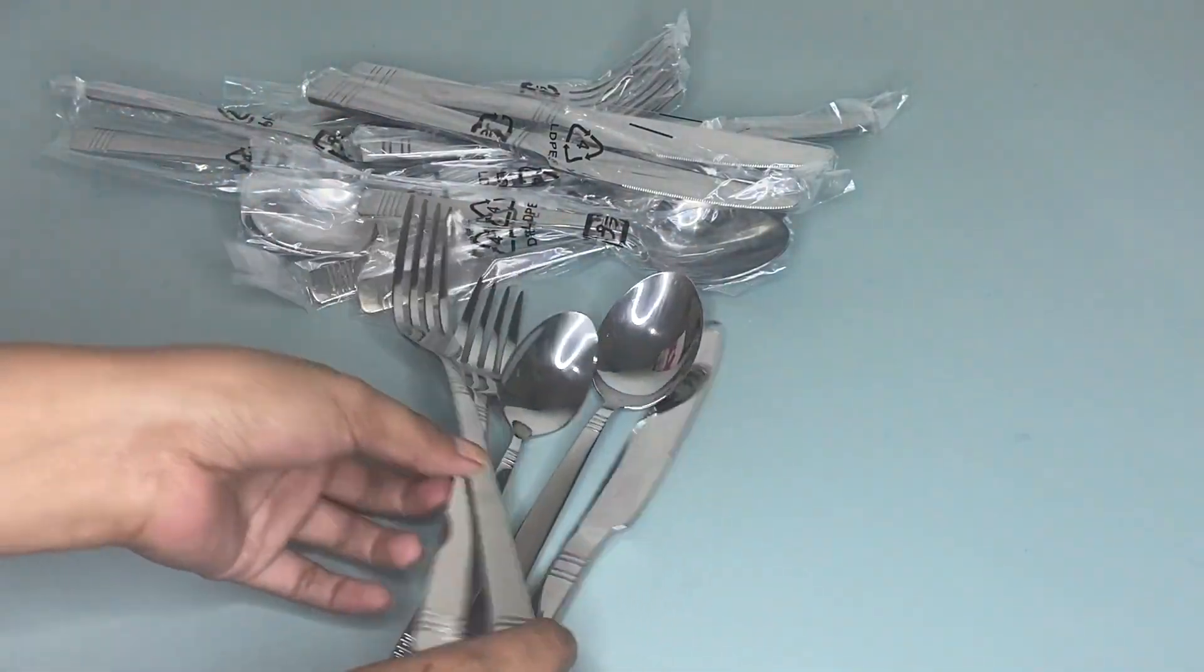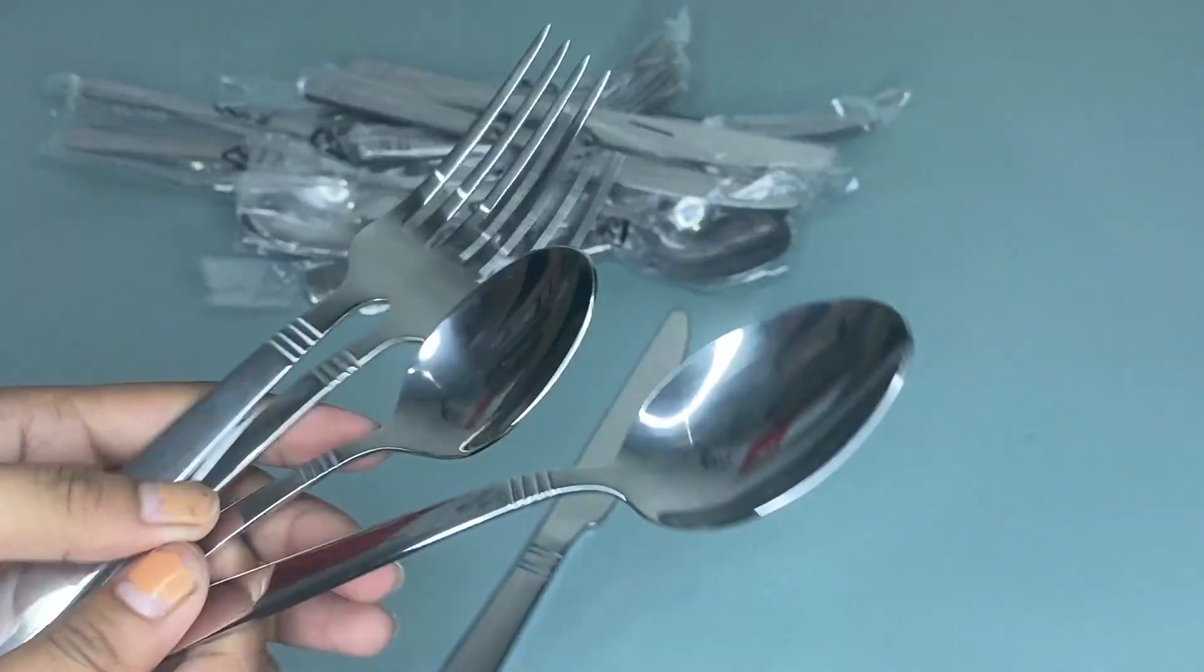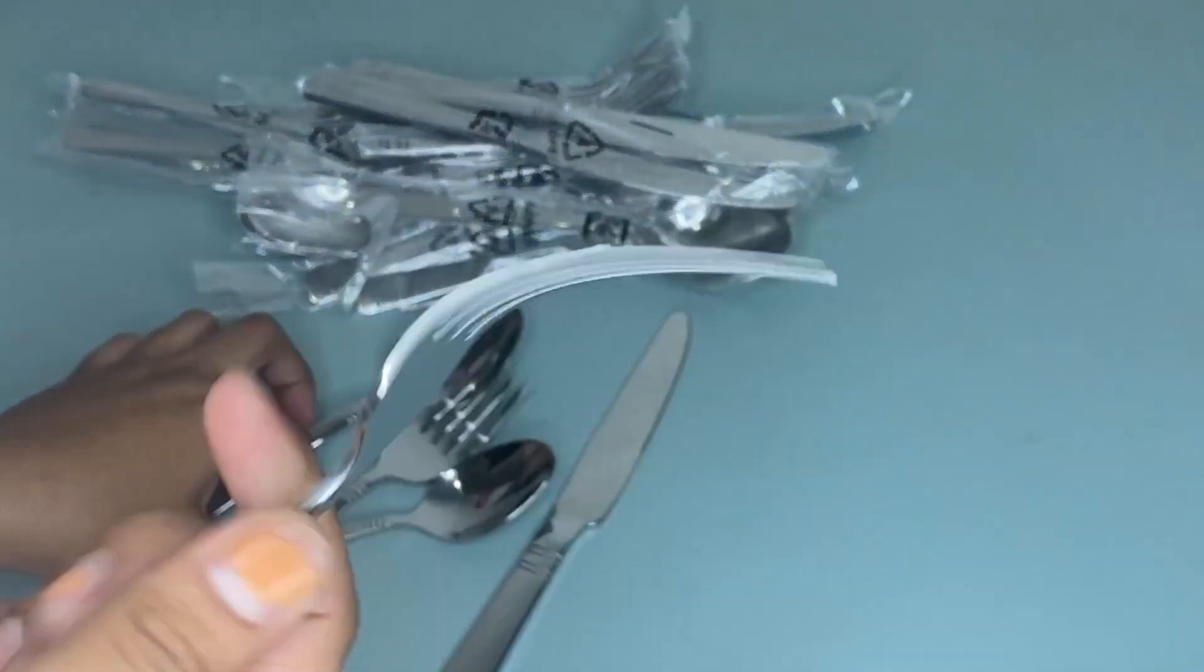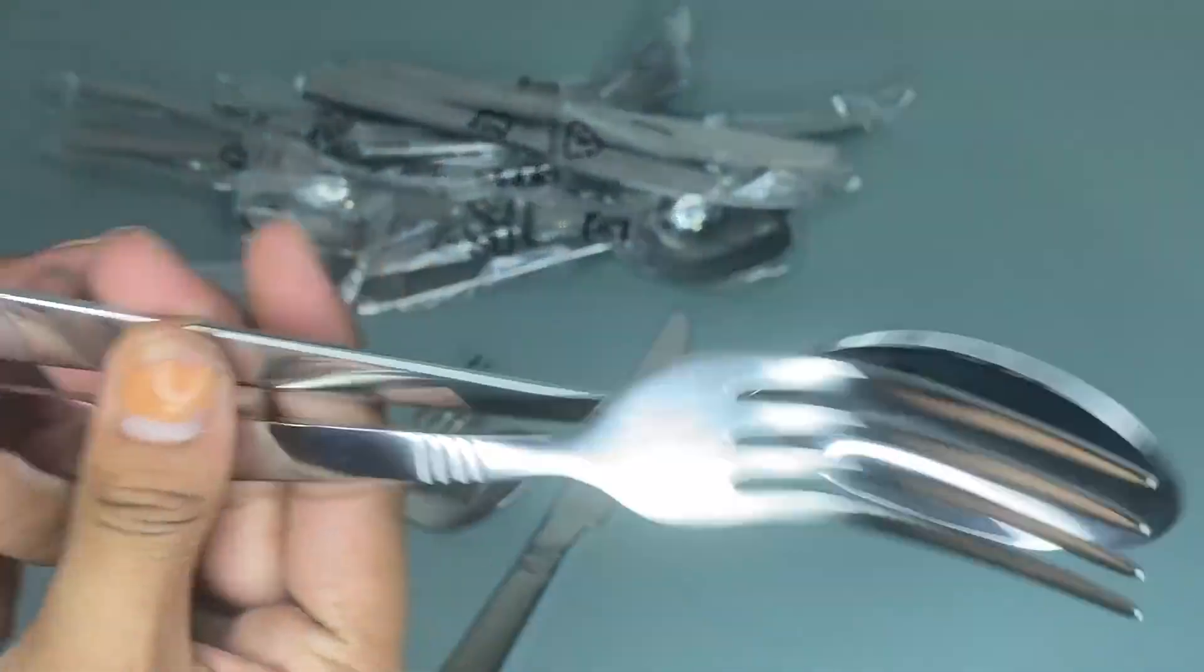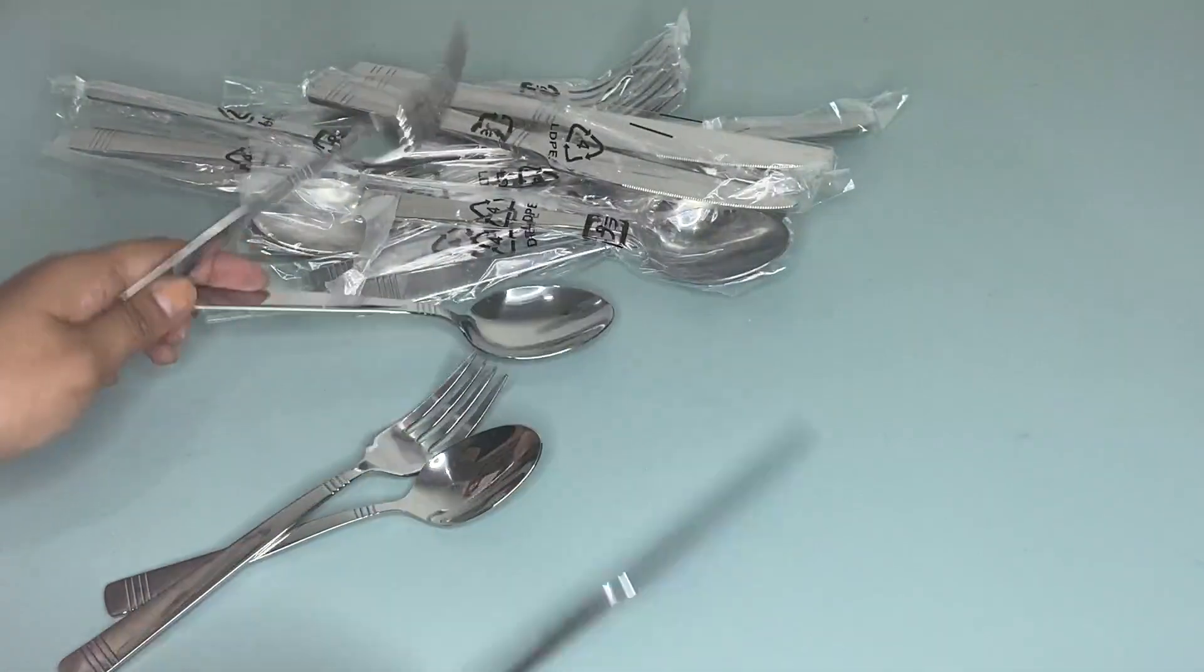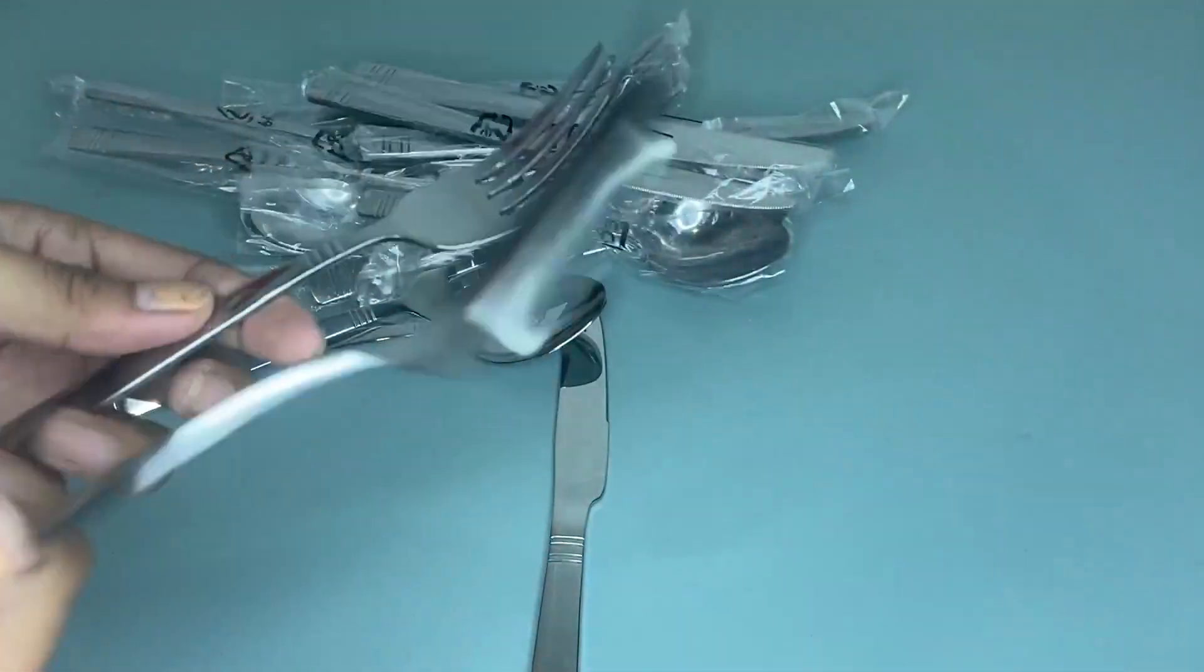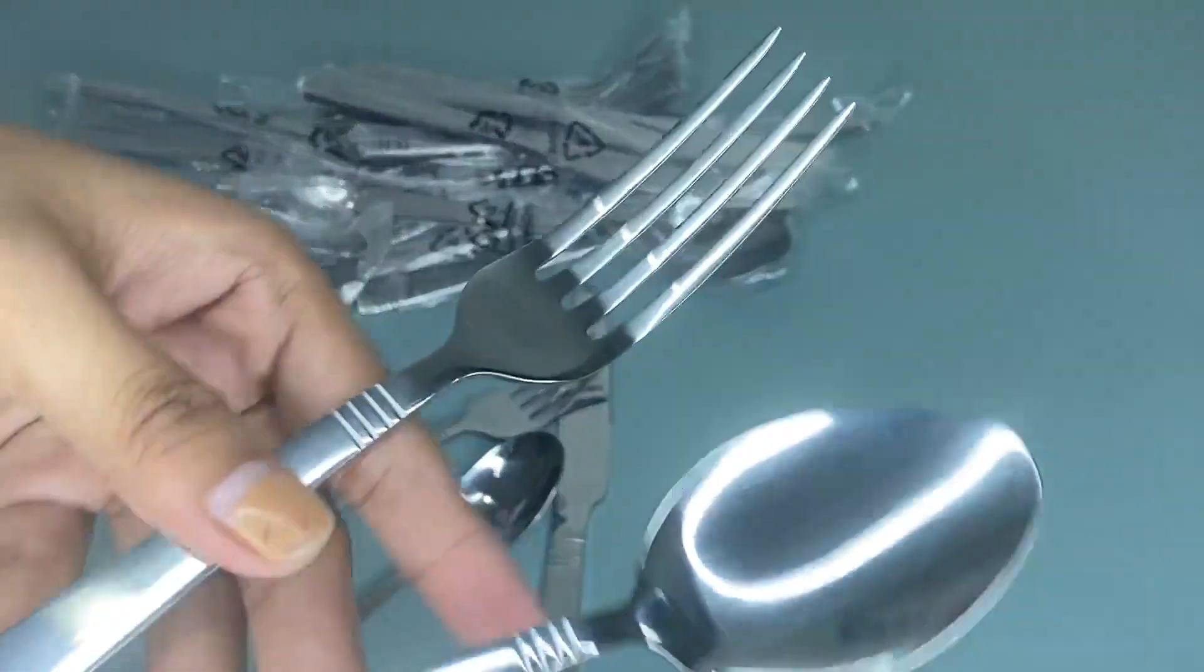The package comes with four salad forks, four dinner forks, four place knives, four soup spoons, and four tablespoons. As you can see, this bistro design has a polished silver finish.